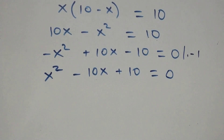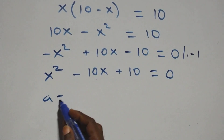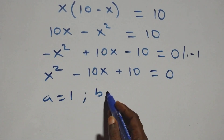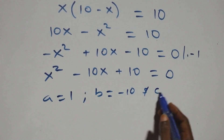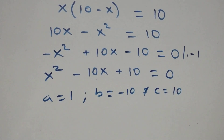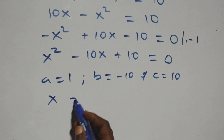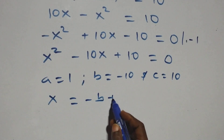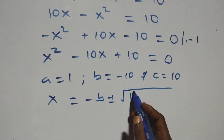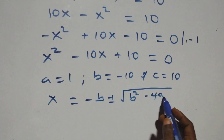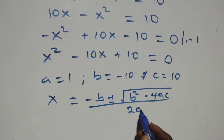This implies we have a quadratic equation where a equals to one, b equals to minus ten, and c equals to ten. We apply the quadratic formula: x equals to minus b plus or minus square root of b squared minus 4ac, all over 2a.